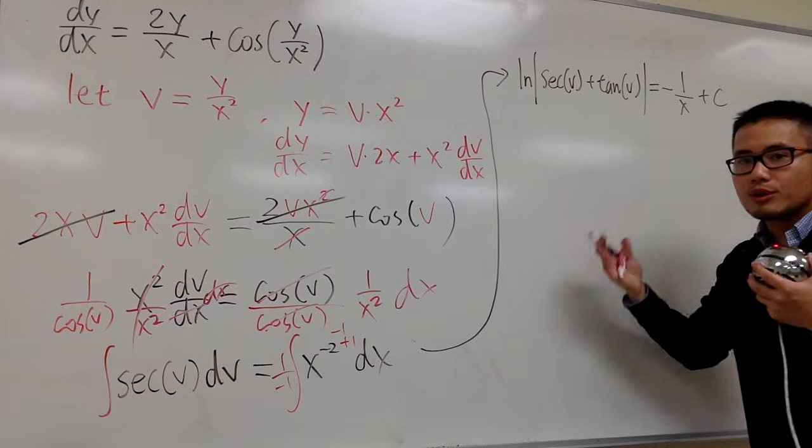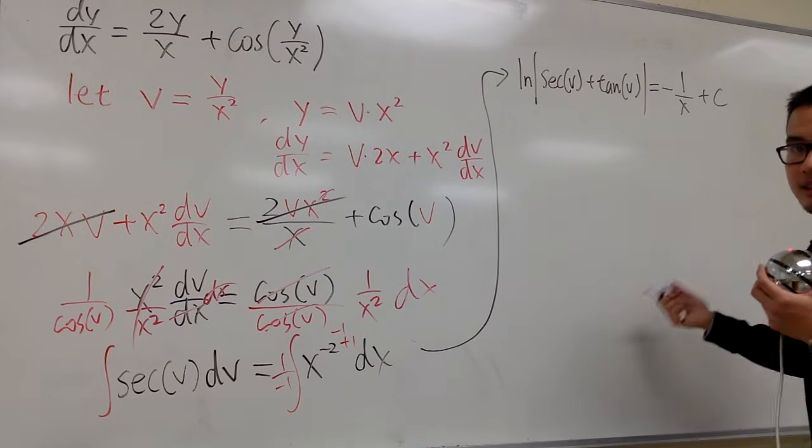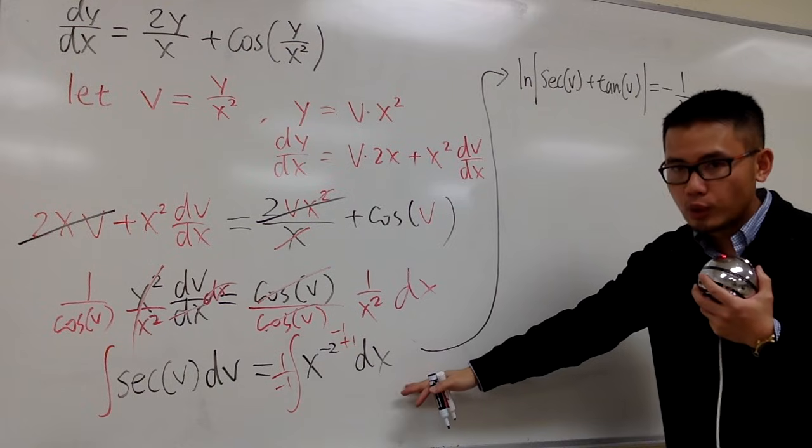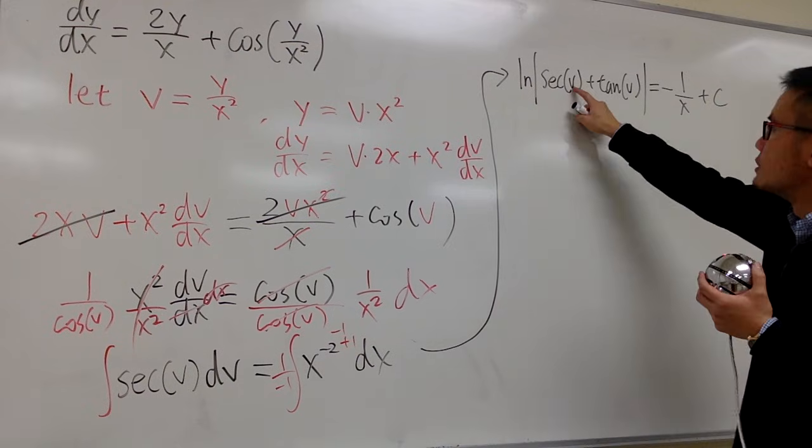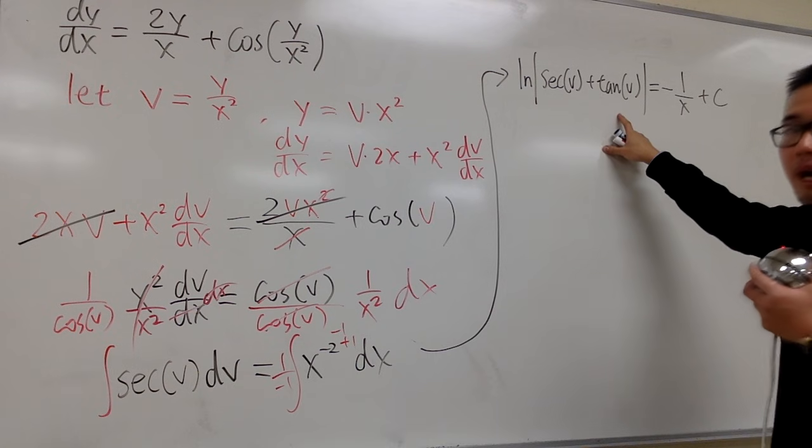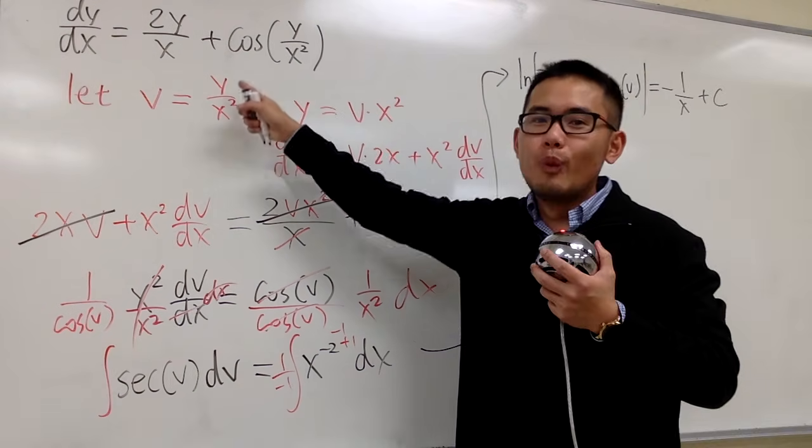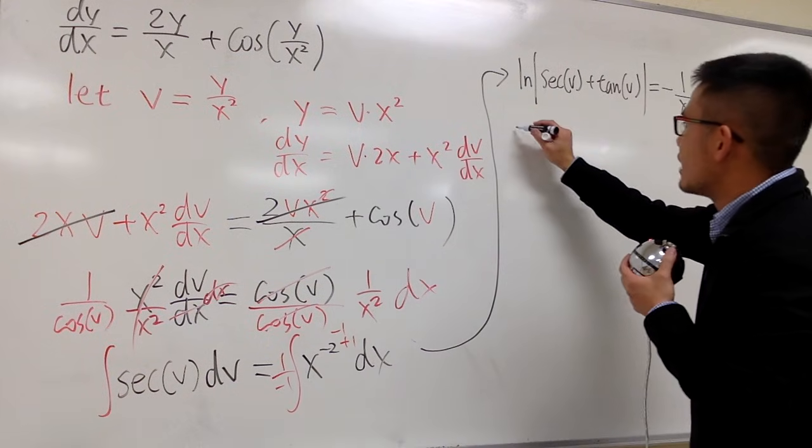And right here, if you want to just go ahead and stop it, it's definitely okay, in a sense that we solve this differential equation, but keep in mind, we still have the v's, right? I cannot isolate the v. But last thing I have to do is, v is what? y over x squared. So finally, I'm just going to put this down.